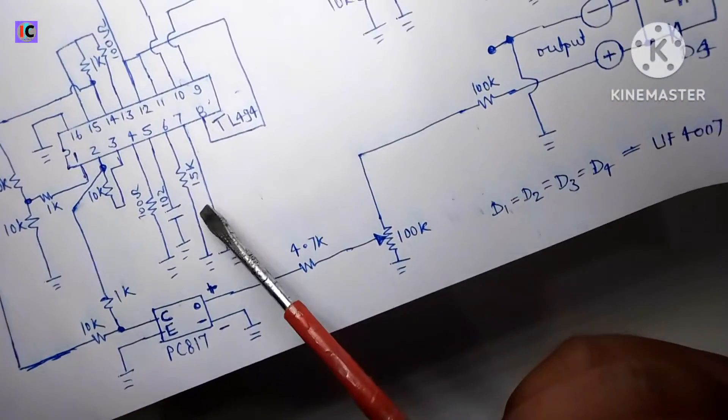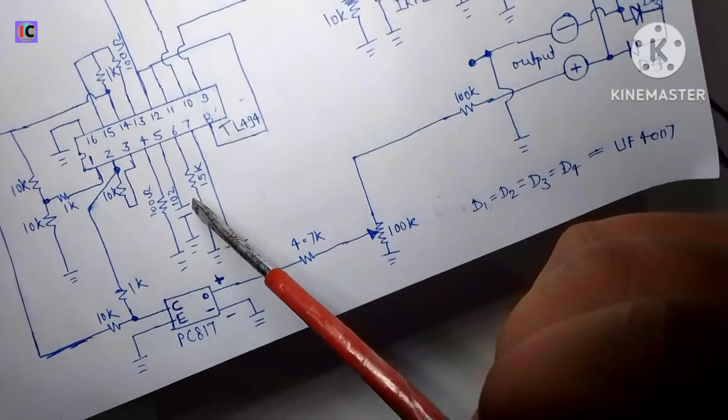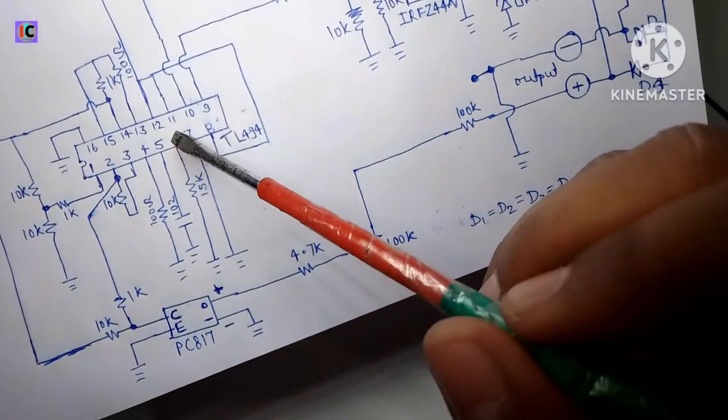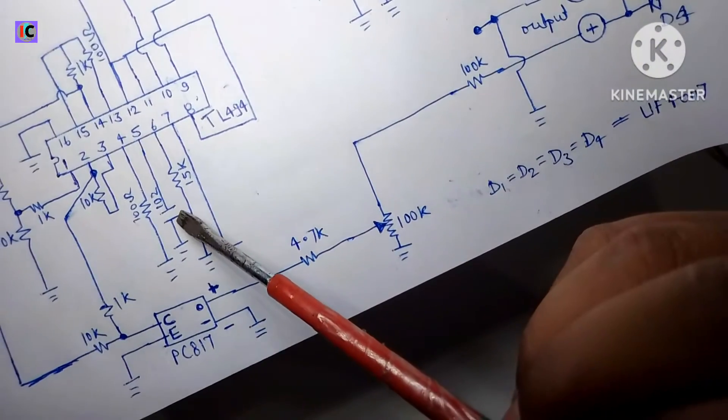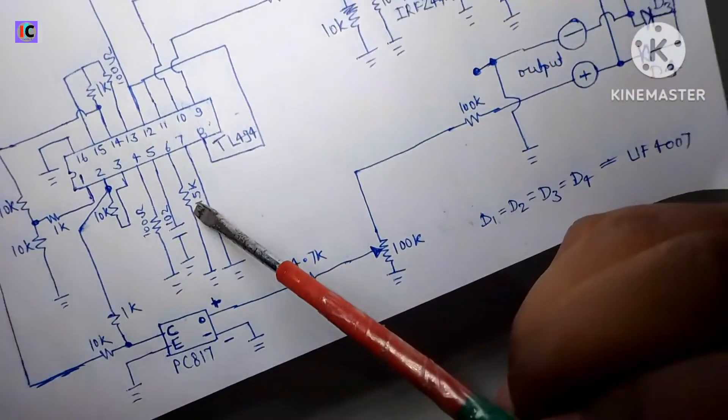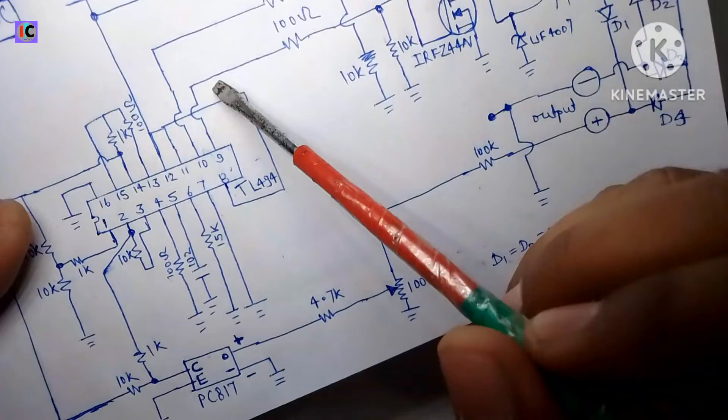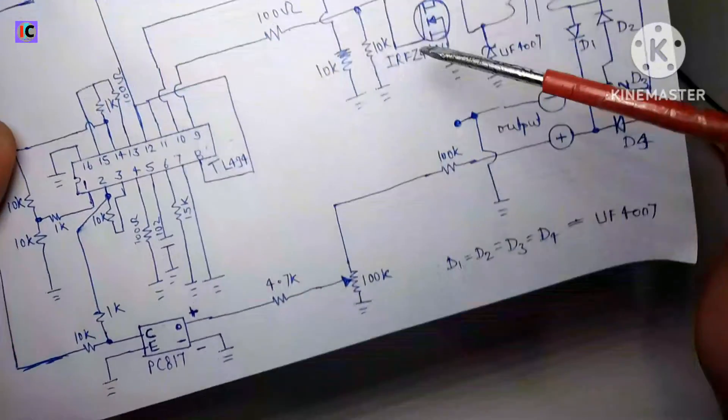And according to the calculation and connecting through my oscilloscope testing, in this calculation of 10 nanofarad capacitor and 15 kilo ohm it gives almost 36 kilohertz of frequency at the output.